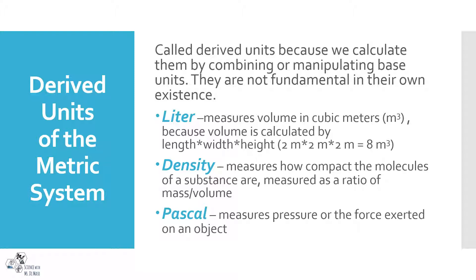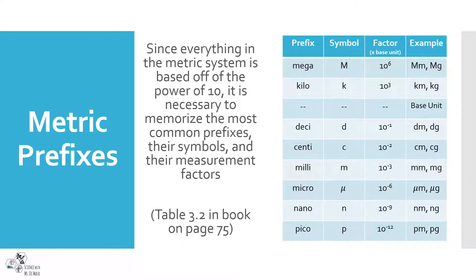Volume is a derived unit from multiple different lengths. Density is the same — it measures how compact or close together the molecules of a substance are, but it's measured as a ratio: mass divided by volume, essentially how much it weighs over how much space it's taking up. Another one we'll use later in the year is the Pascal, which measures pressure or the force exerted on an object.